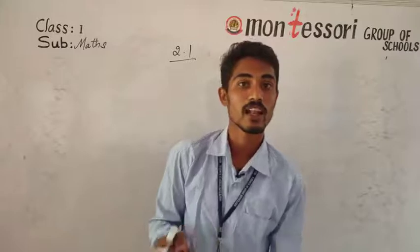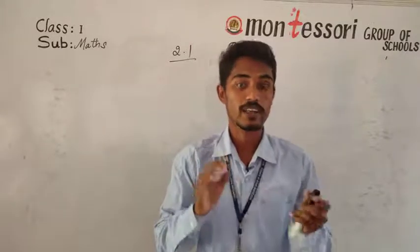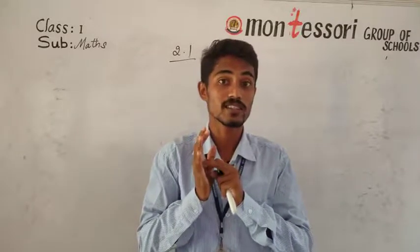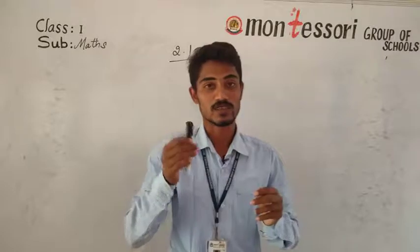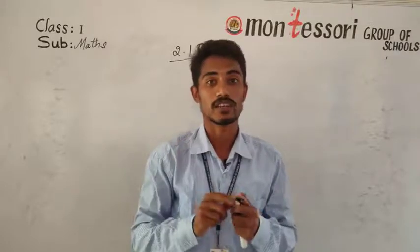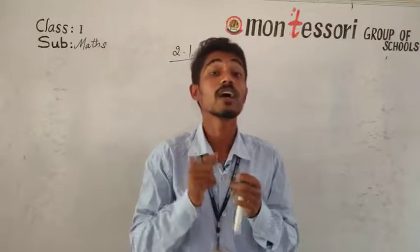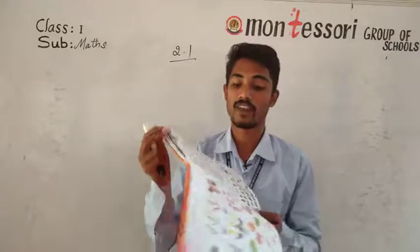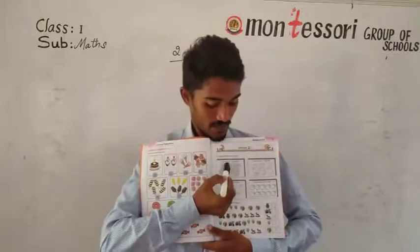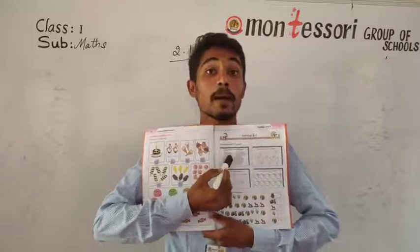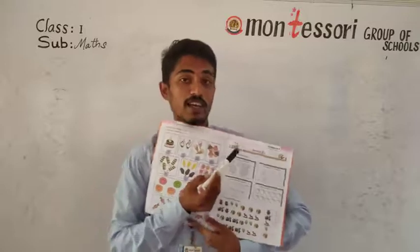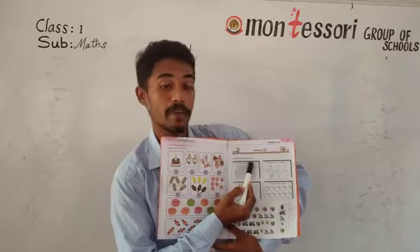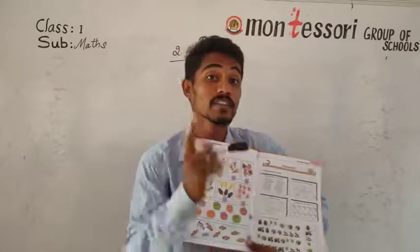In the last video we counted numbers using cakes, ice creams, cupcakes, donuts, chocolates, etc. Here also we have to count and color. In page number 11, the first item given is pineapples. Above the pineapples he gave one condition: count and color one pineapple. How many pineapples? One pineapple.